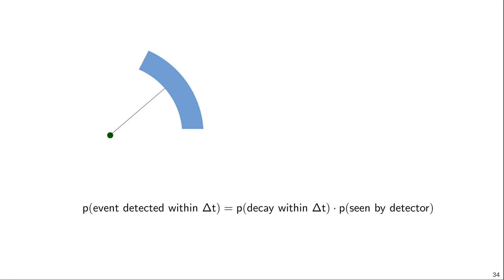We can say that the probability that the detector detects the event has two components. The first component is the probability that the decay of the nucleus happens within delta t, which is related to delta t and the half-life of the nucleus. The second component is the probability that the detector sees the emitted gamma ray, which depends on the angular coverage of the detector and also on the detector efficiency.